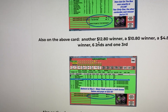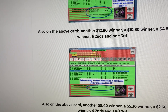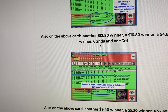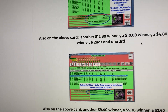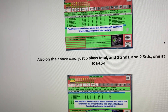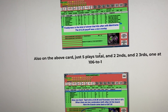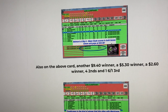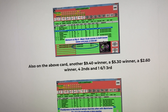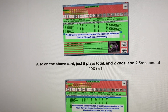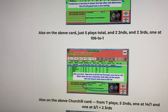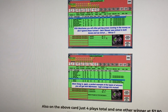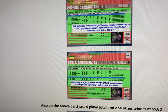We give several examples — here's a $12.80 winner, which is very typical of what the program will get. On this card we also had a $10.80 winner, a $4.80 winner, six seconds, and one third. So you get a lot of hits. Here's another one — a $9.40 winner. Here's one where a horse paid 106-to-1 and ran third but paid 106-to-1. So if a program can pick a horse at 106-to-1 and the horse runs well, something is going on in this program that you want to know about. Most of these cards had several other winners as well — win, place, and show.